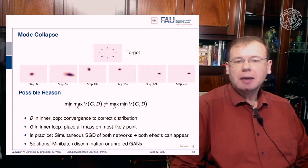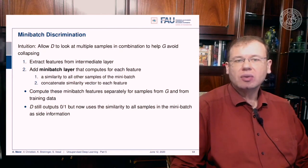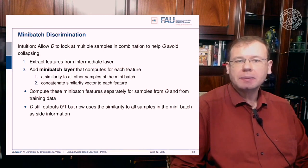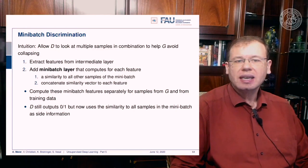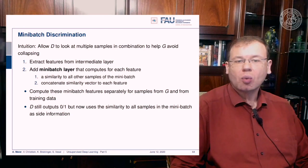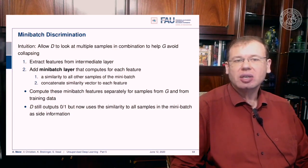Solutions include minibatch discrimination and unrolled GANs. Minibatch discrimination allows the discriminator to look at multiple samples in combination to help the generator avoid collapsing. You extract features from an intermediate layer, add a minibatch layer that computes, for each feature, a similarity to all other samples in the minibatch, and concatenate this similarity vector to each feature. These minibatch features are computed separately for generator samples and training data. The discriminator still outputs 0 or 1 but uses the similarity of all minibatch samples as side information.